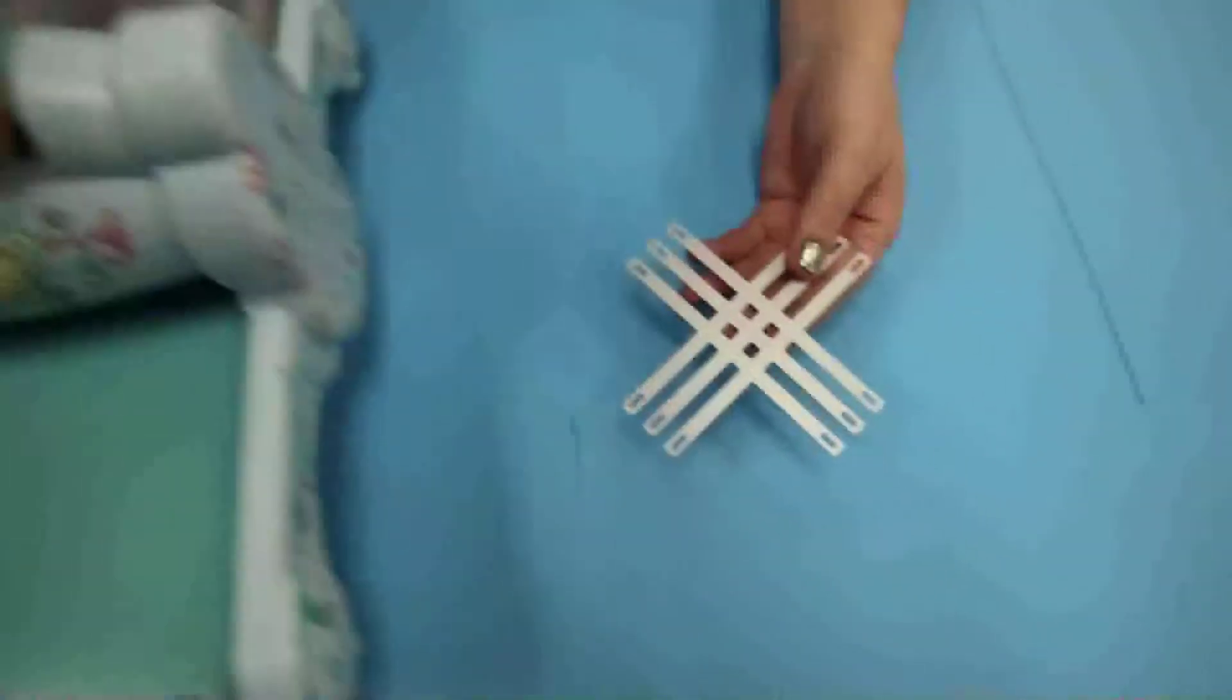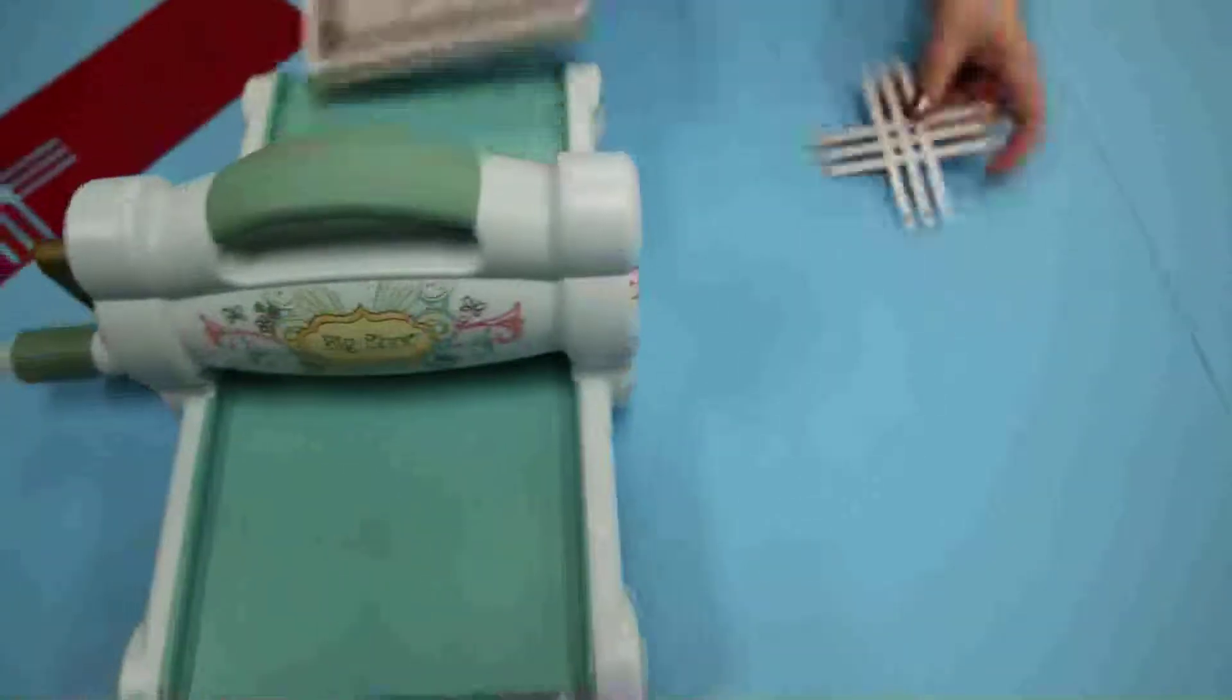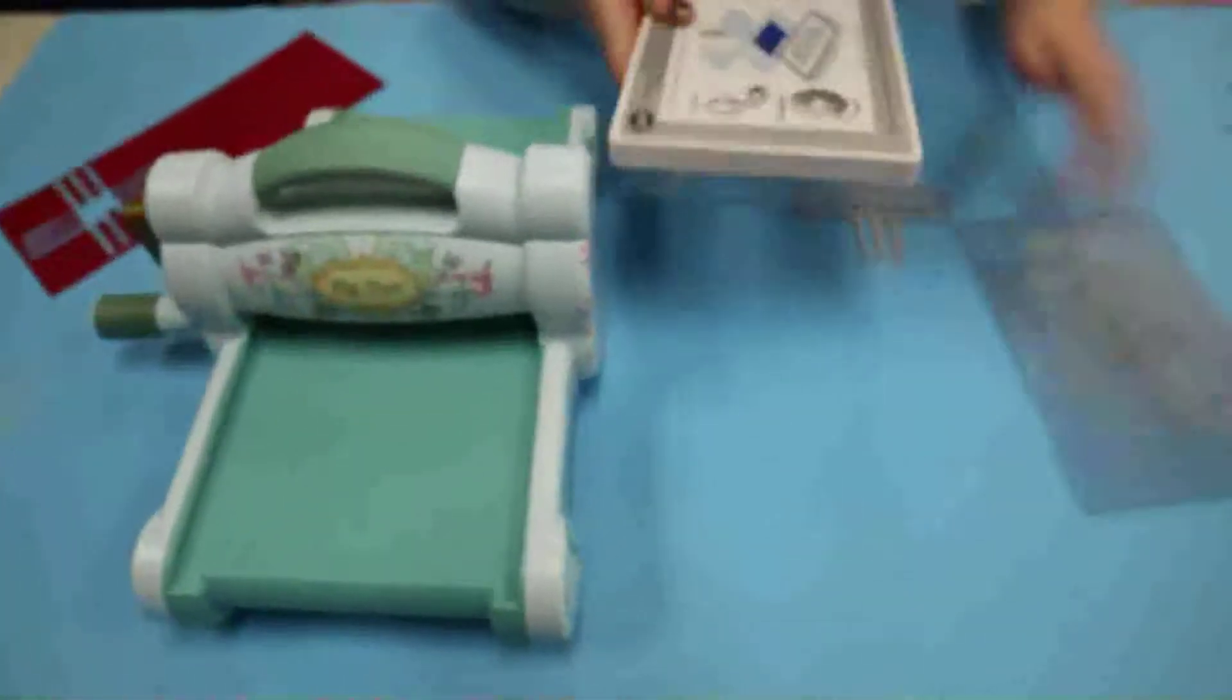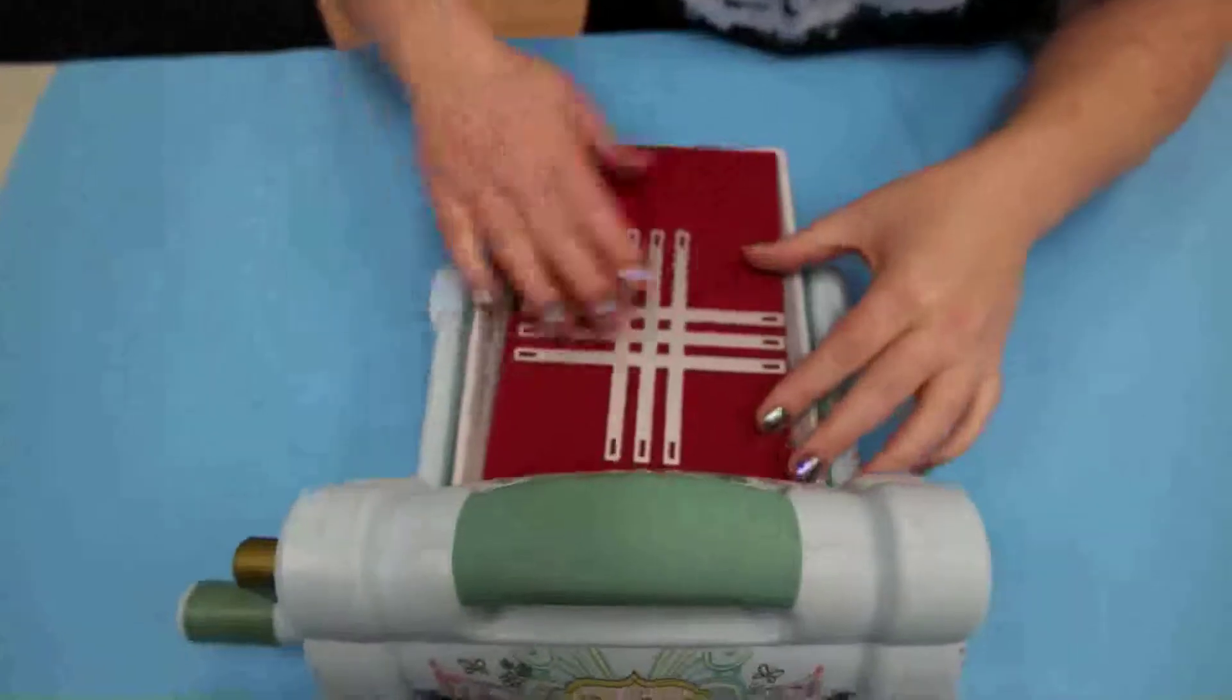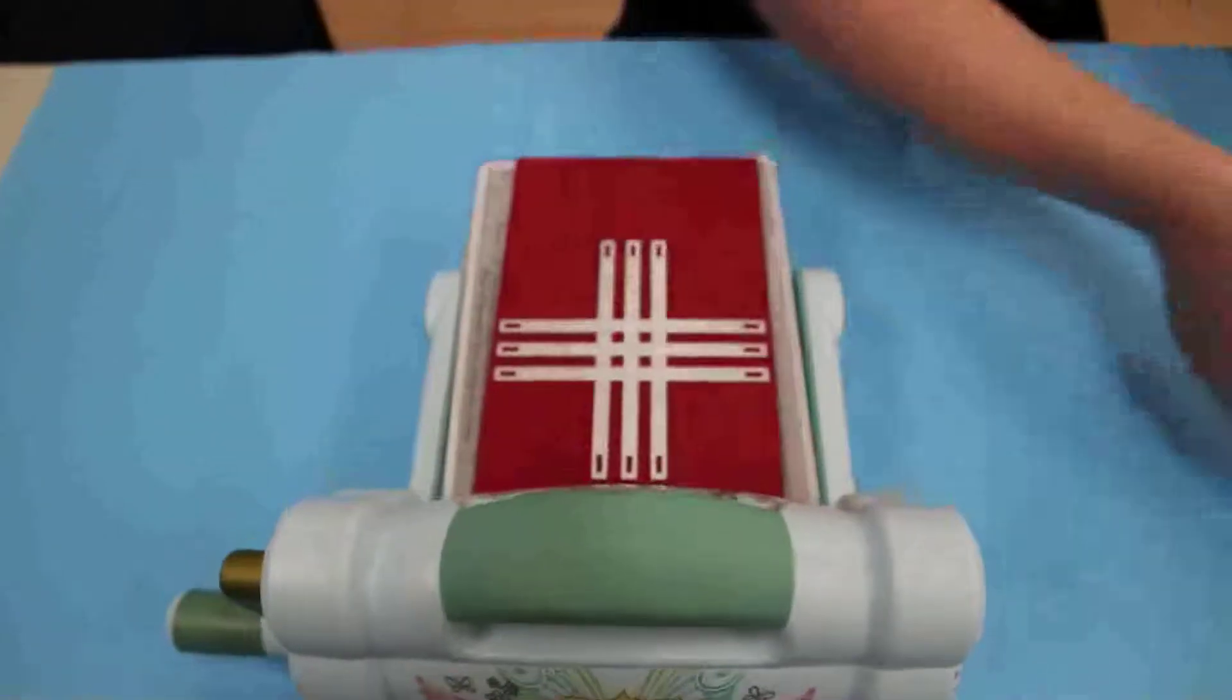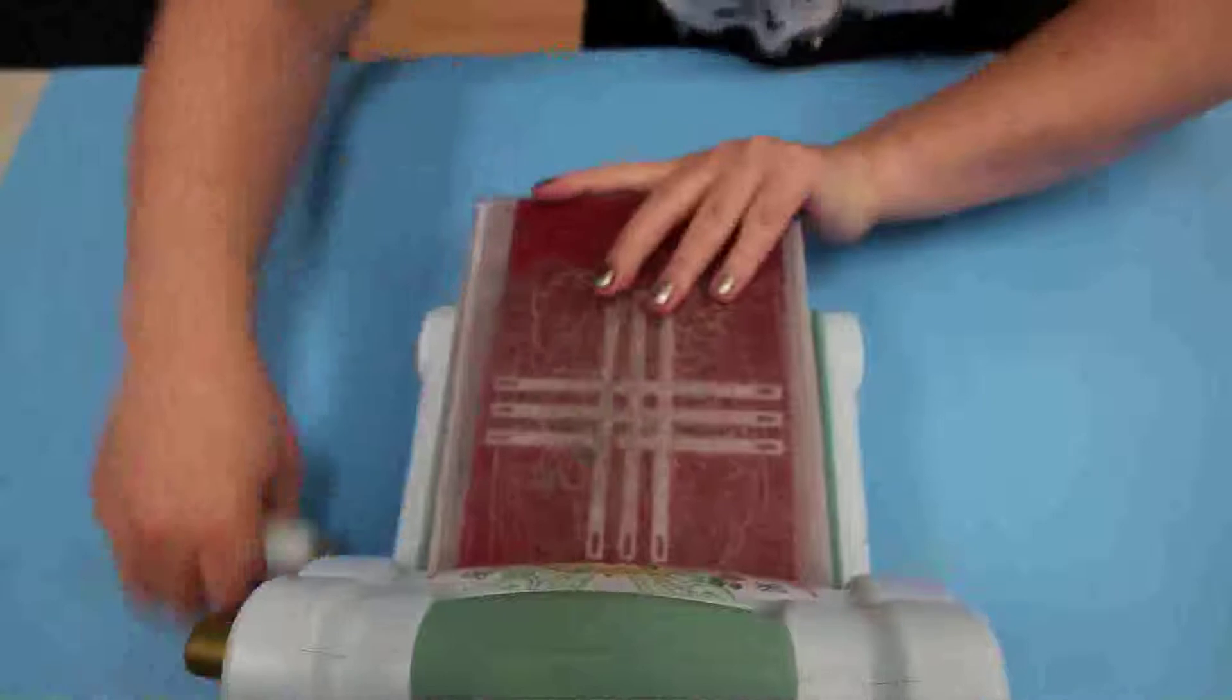So let me grab the Big Shot and we are going to, I've got my magnetic base here, put down my plate red cardstock. This will just snap right into place because it's on the magnetic base and roll this through.